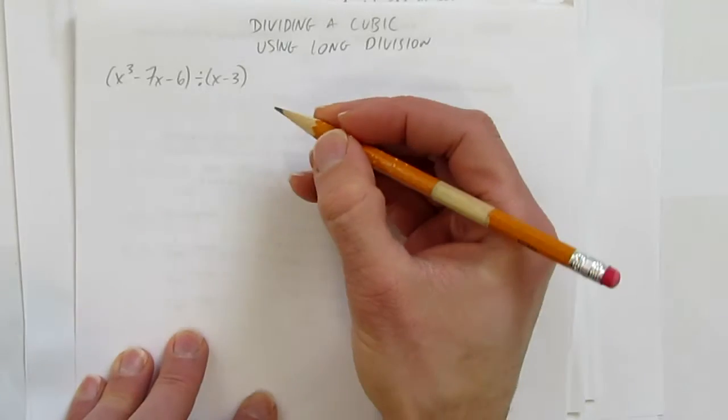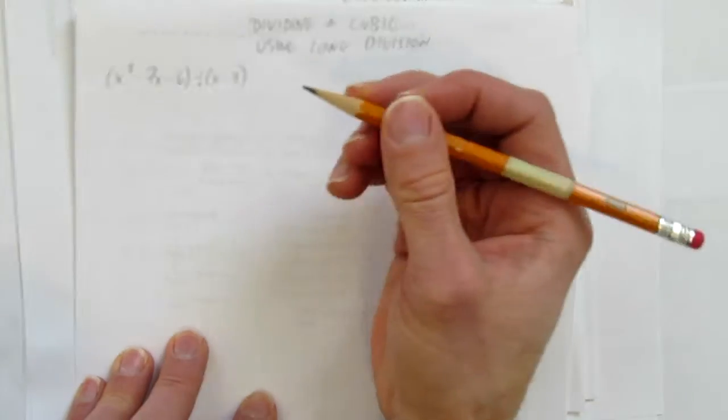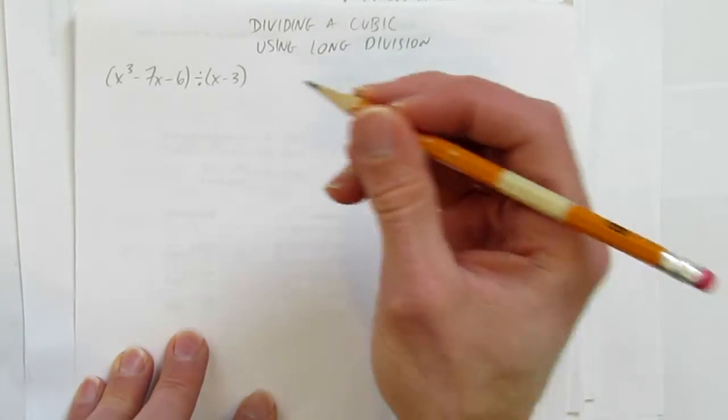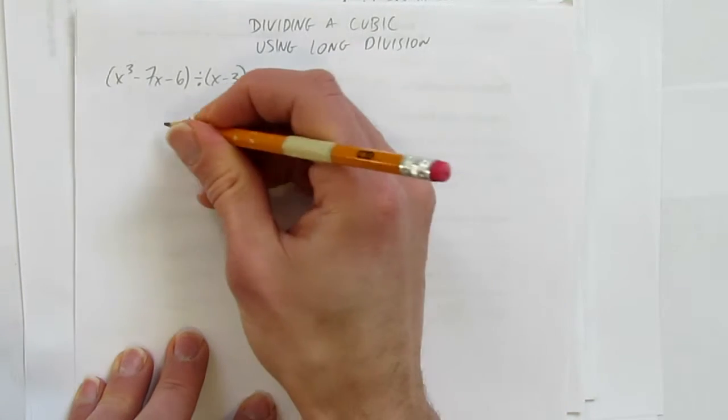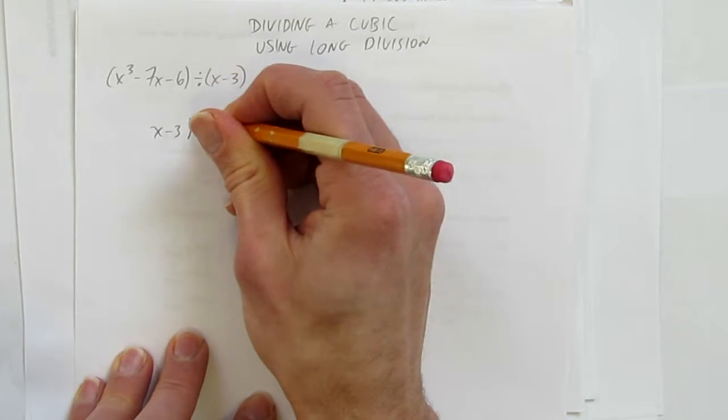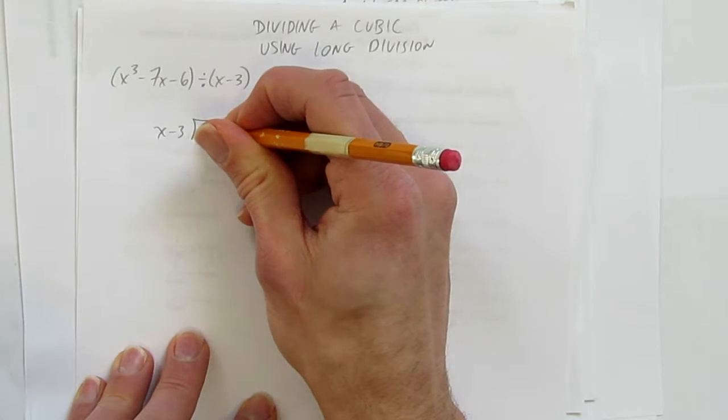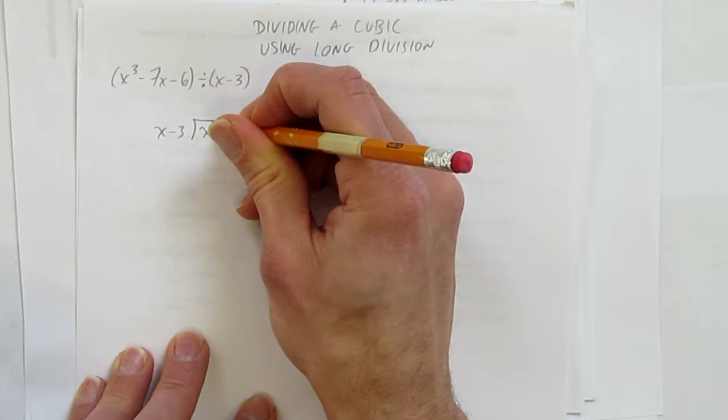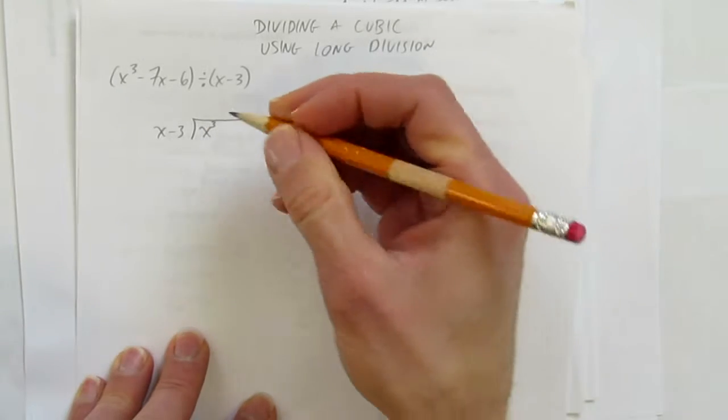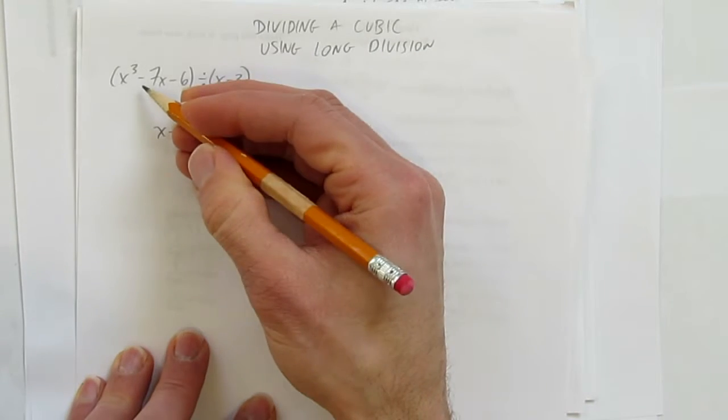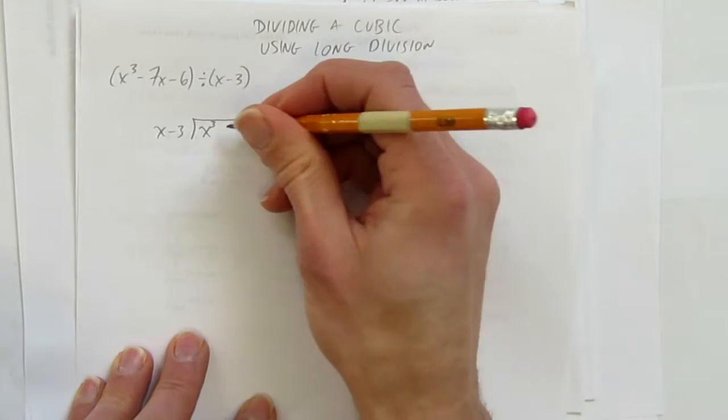It works a lot like division from grade school, except it's with polynomials. We put the divisor, x - 3, on the outside. On the inside, we need our dividend, the thing we're dividing, x³.